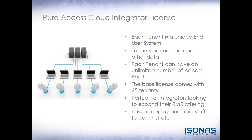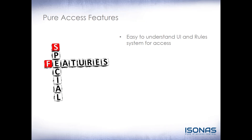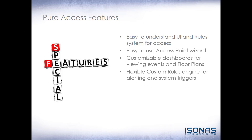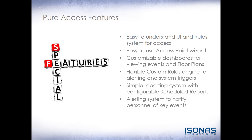Peer Access is very easy to deploy and very easy to train staff to administrate. Features include an easy-to-understand user interface and rule system for access, an easy-to-use access point wizard when adding RCO4, Peer IP, or PowerNet devices, customizable dashboards for viewing events and floor plans, a flexible custom rules engine for alerting and system triggers, a simplified reporting system with configurable scheduled reports, an alerting system to notify personnel of key events, and Active Directory and Milestone integration.